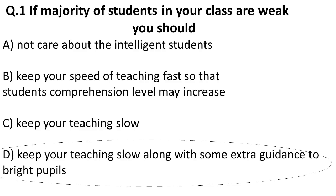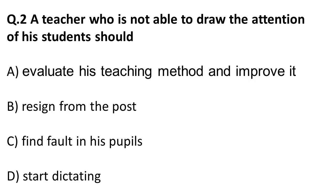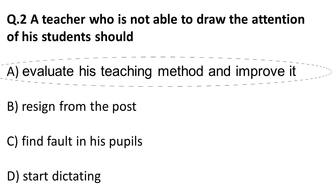Question two: A teacher who is not able to draw the attention of his students should — options are: A) evaluate his teaching method and improve upon it, B) resign from the post, C) find the fault in his pupils and start dictating. The correct answer is A: he should evaluate his own self, find out shortcomings, and improve upon his teaching method.